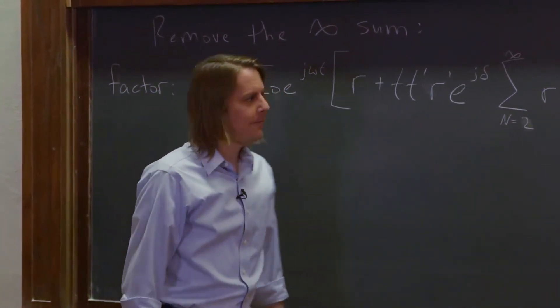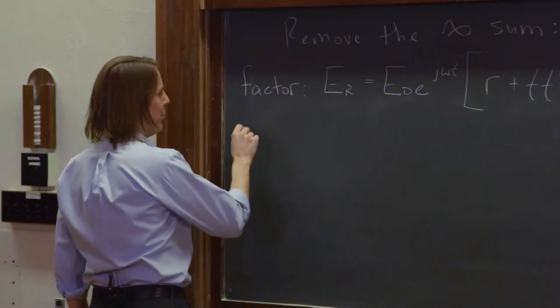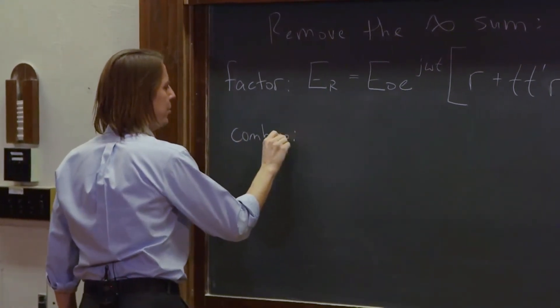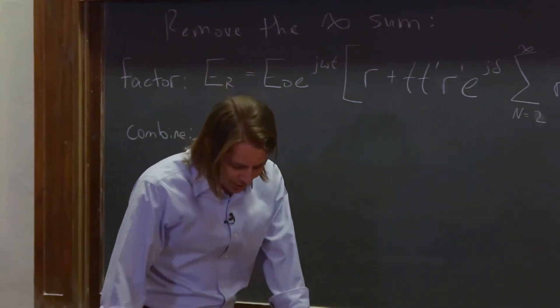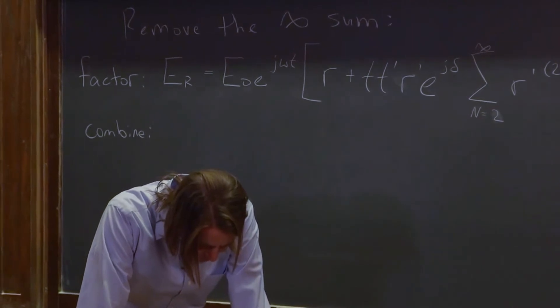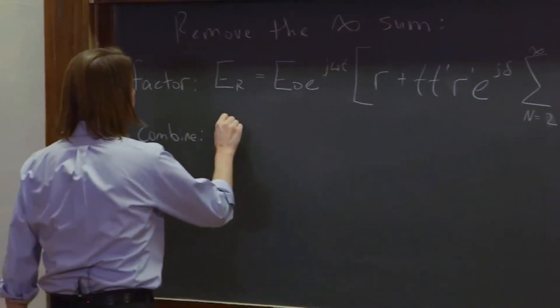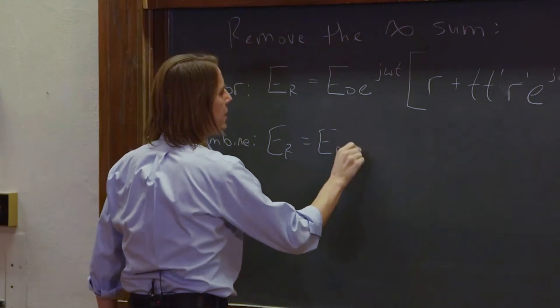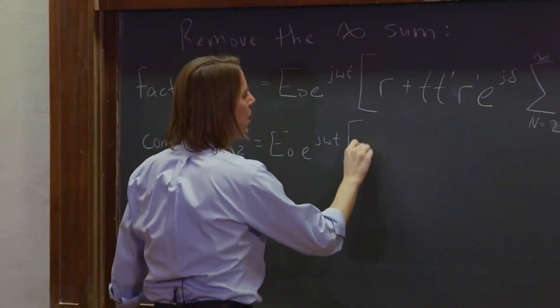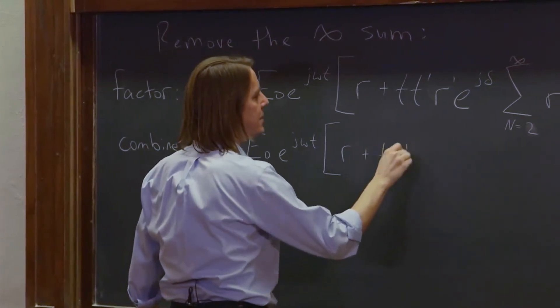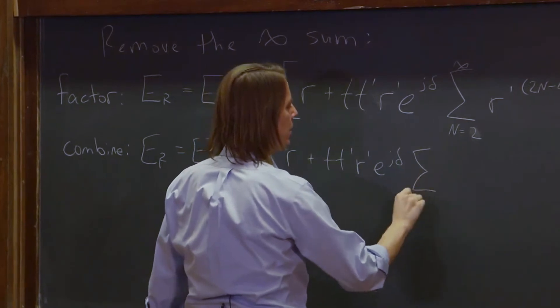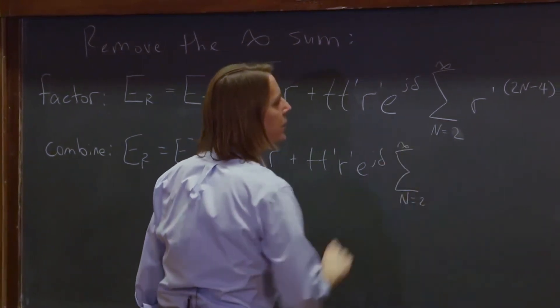Let's see. Now that we've factored, we have to combine and use less board when we combine. I got a little carried away. Combine. What are we going to combine? Oh, yes. So we're going to say it's equal to E_R is E not E to the J omega T R plus T T prime R prime E to the J delta sum N equals 2 to infinity.